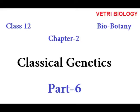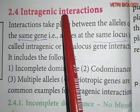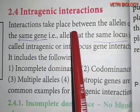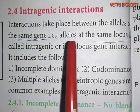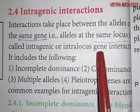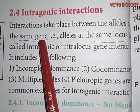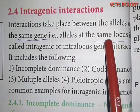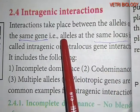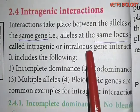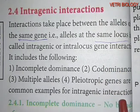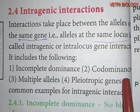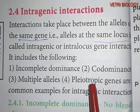Dear children, we have learnt the definition and types of gene interactions in the previous class. Now let us learn intragenic interactions. Interactions that take place between the alleles of the same gene — that is, alleles at the same locus — are called intragenic or intralocus gene interactions. Common examples include incomplete dominance, co-dominance, multiple alleles, and pleiotropic genes.